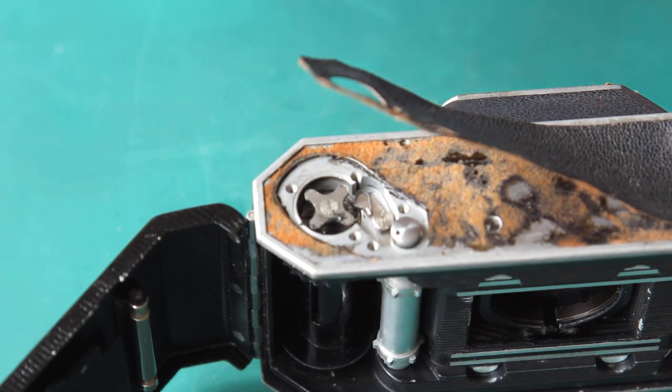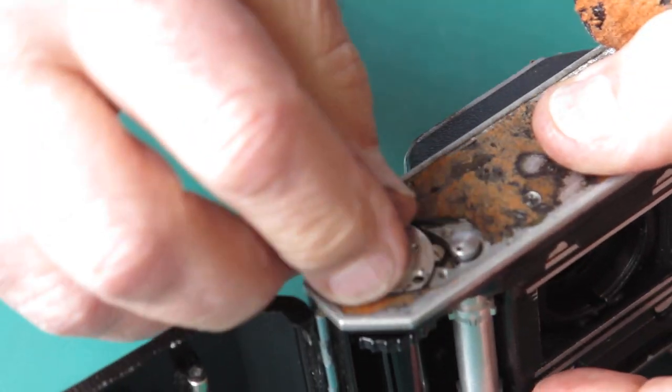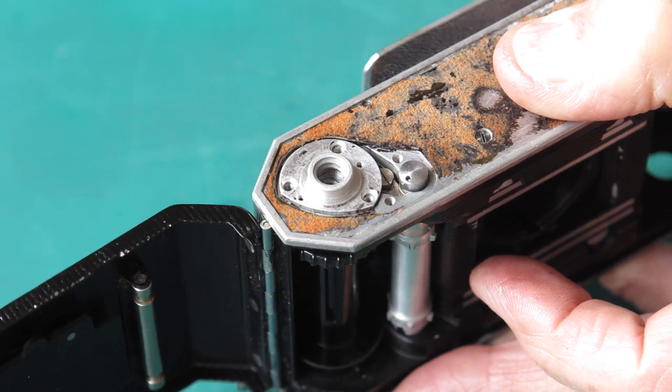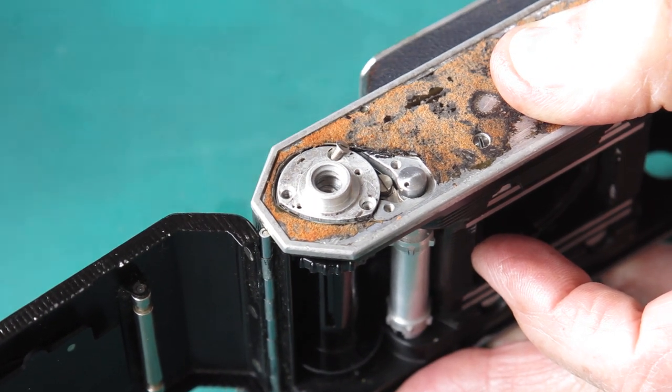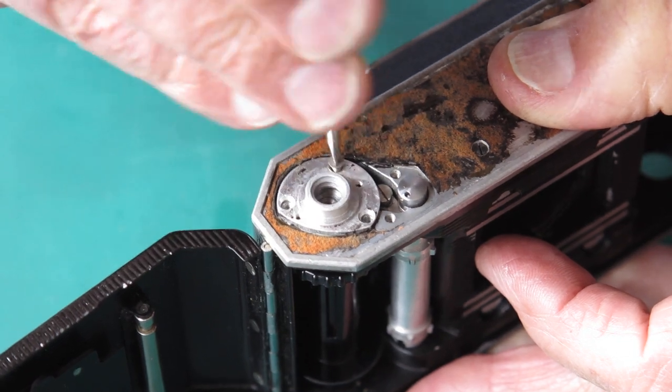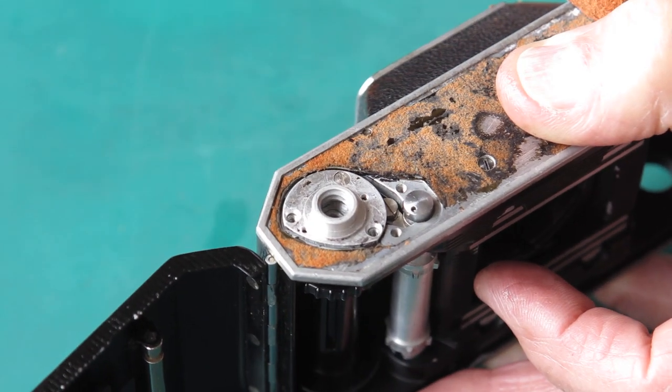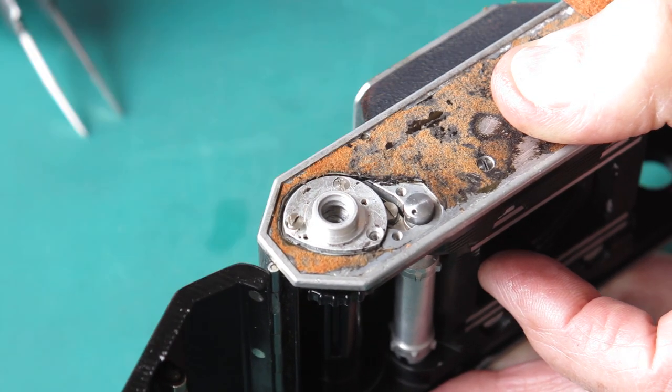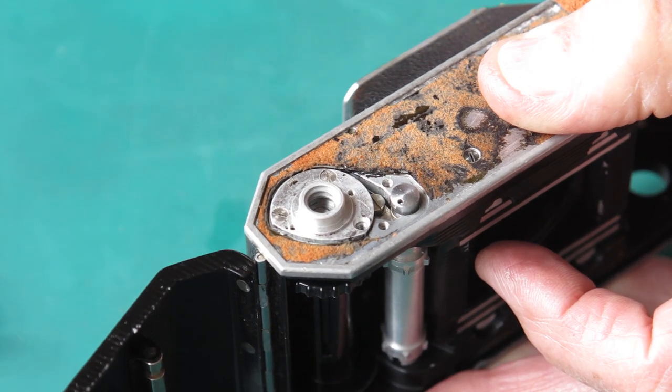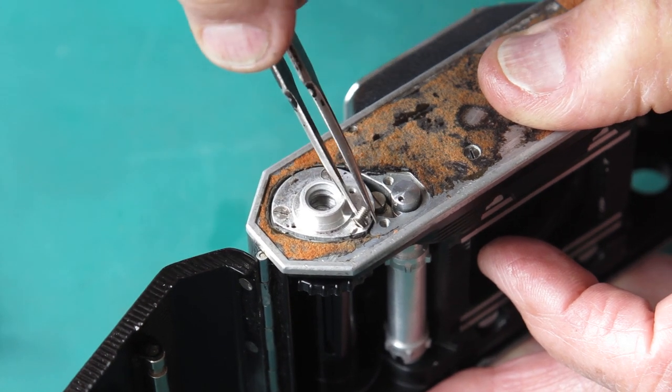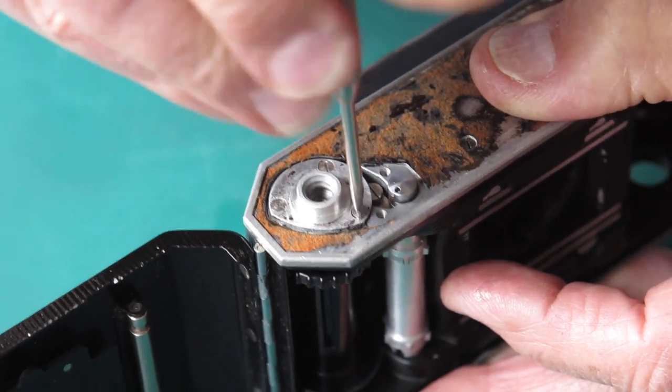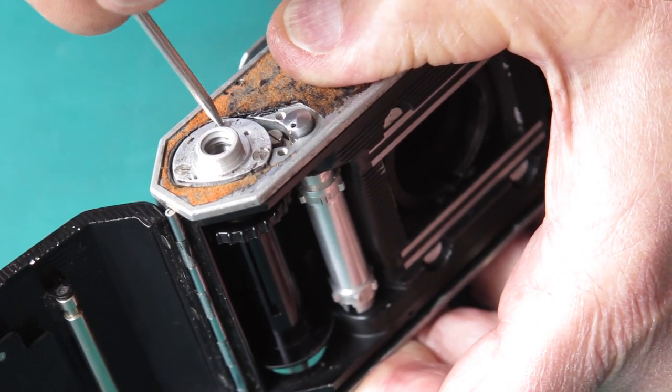So tripod socket can go on the base. You can usually tell these three screws because they'll be the ones that have got the adhesive on them or scraps of leather or both. Okay, three screws are in place, so I can tighten them up.